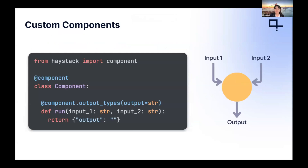This is what a custom component looks like. It's basically a Python class created with the component decorator that comes with Haystack. You define a run method that also defines the inputs and outputs of your component — your node in the graph. For example, this component has two string inputs and one string output, but it can have more than two inputs or multiple outputs. Every component in Haystack is written that way.